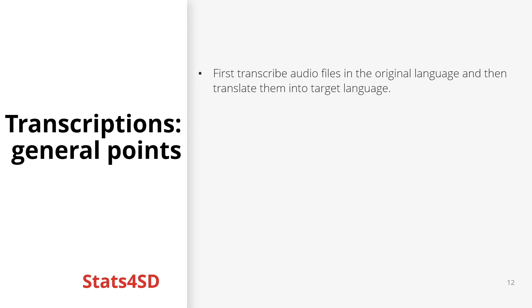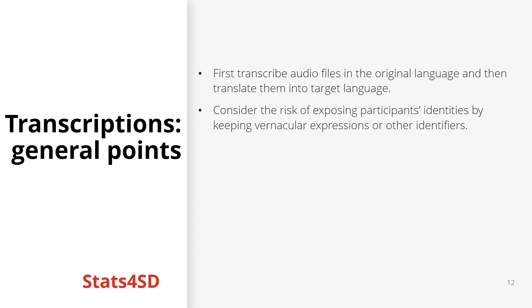Whether the interviewer is also the transcriber or they hire an external one, it is good practice to first transcribe audio files in the original language and then translate them into another target language if needed. We need to consider whether a high level of accuracy of transcripts — for instance, vernacular expressions — may expose participants' identities or encourage negative perceptions towards them. Moreover, we should always remember to anonymize participants in transcripts and develop a protocol to refer to them with participant IDs linked to their actual names, stored separately and secured in a document that contains a list of research participants.